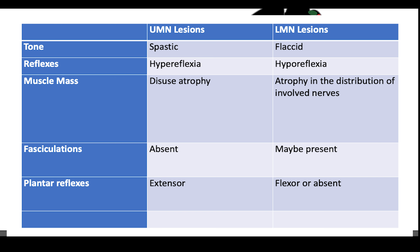Fasciculations — meaning visible twitches in the muscles — are not seen with upper motor neuron lesions but may be seen with lower motor neuron lesions. The plantar reflex test is performed by scratching the plantar surface of the sole. Extensor plantar responses are suggestive of an upper motor neuron lesion, while flexor or absent plantar reflexes are suggestive of a lower motor neuron lesion.